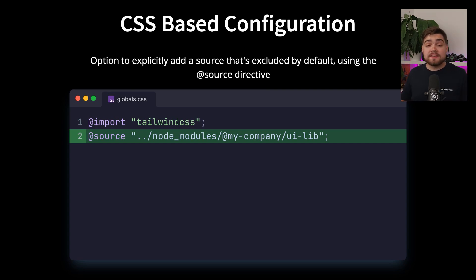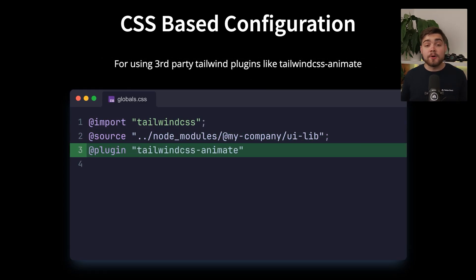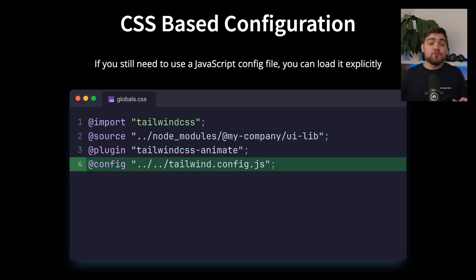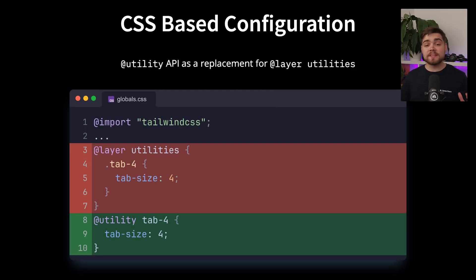Other awesome directives for configuration include @plugin to add third-party plugins like Tailwind Animate, @custom-variant, and a new @config directive in case you still need to use the old JavaScript file. They've also removed the @tailwind directive — you now just use the CSS import. And instead of using the layer directive to extend utilities like before, there is now a new @utility directive.